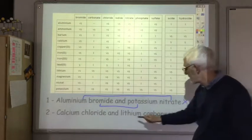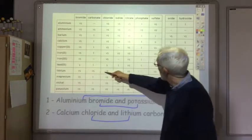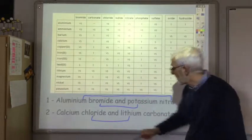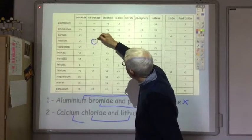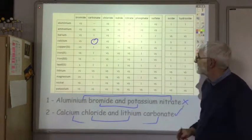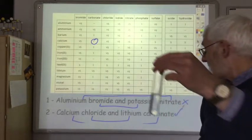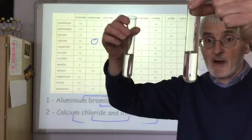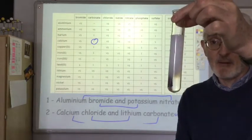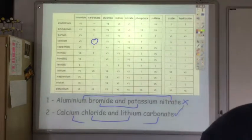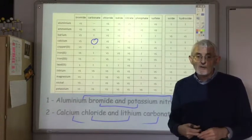Lithium chloride would be very soluble and wouldn't precipitate, but calcium combined with carbonate forms calcium carbonate, which is insoluble. So this combination will produce a precipitate of calcium carbonate. Here we have calcium chloride and lithium carbonate — when added together the solution goes cloudy because the solid calcium carbonate has been produced. Those are the two qualitative tests we can use to show whether something is present.